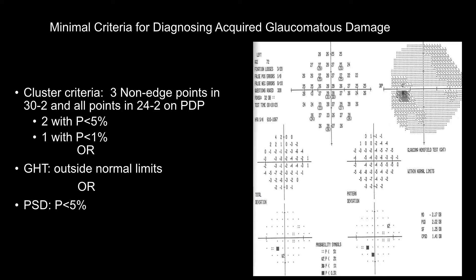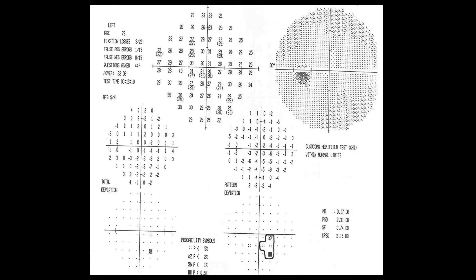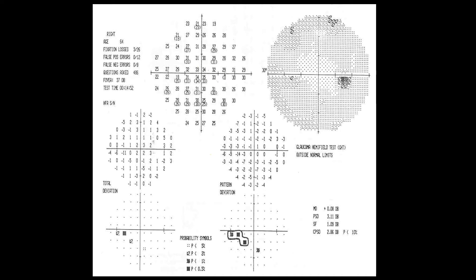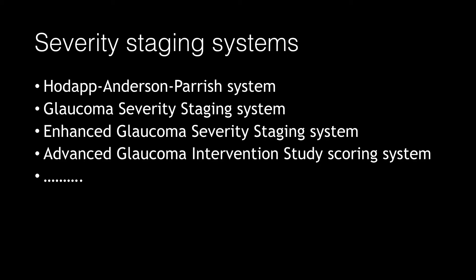The third criteria is having a PSD with a p-value less than five percent. Detecting any one of these listed factors will make that visual field abnormal. In this example, we have abnormal cluster criteria but the two other factors are normal. In another example, we have abnormal cluster criteria and abnormal glaucoma hemifield test.